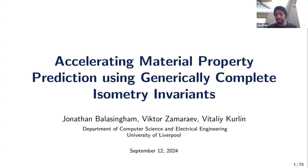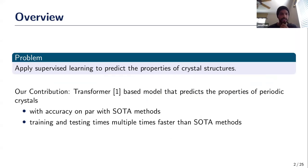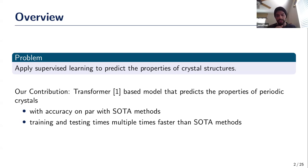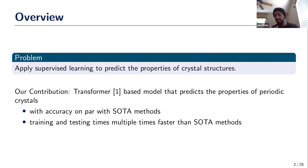Today we're going to be talking about some of the research that we published earlier this year. As a brief overview, our goal with this project was to apply supervised learning to predict the properties of crystal structures. Our contribution was a transformer-based model that could do exactly that, providing accuracy on par with state-of-the-art results while being several times faster in terms of training speed and prediction time.